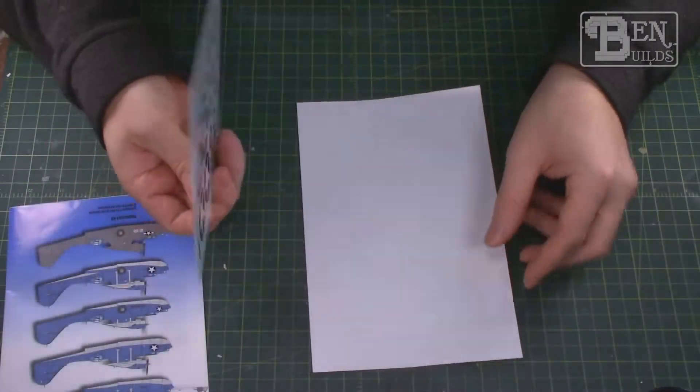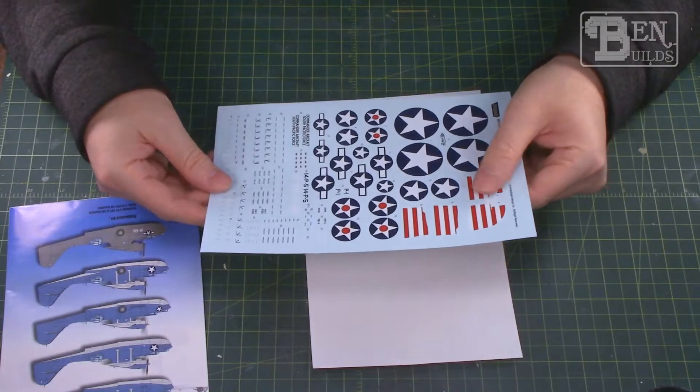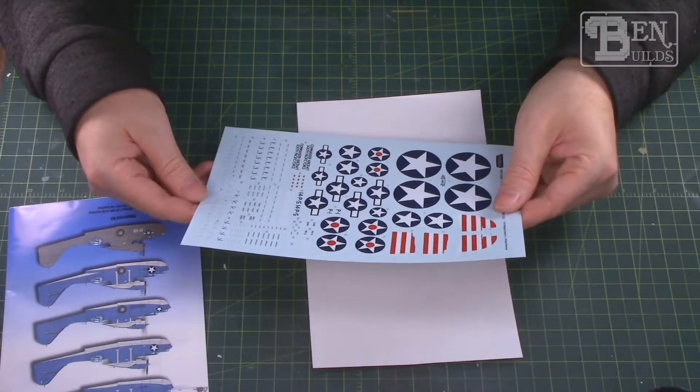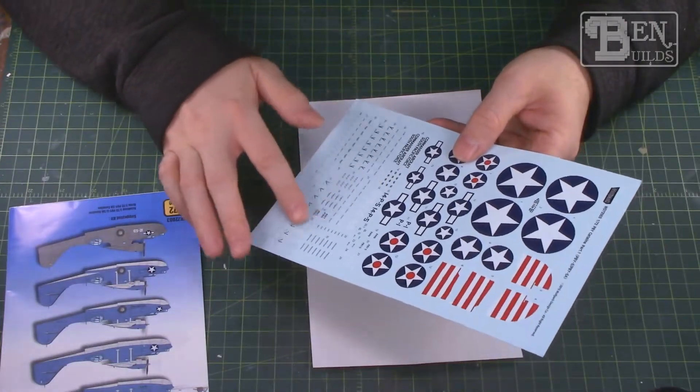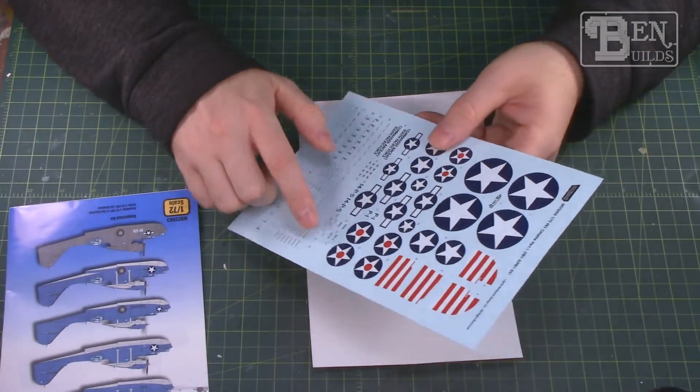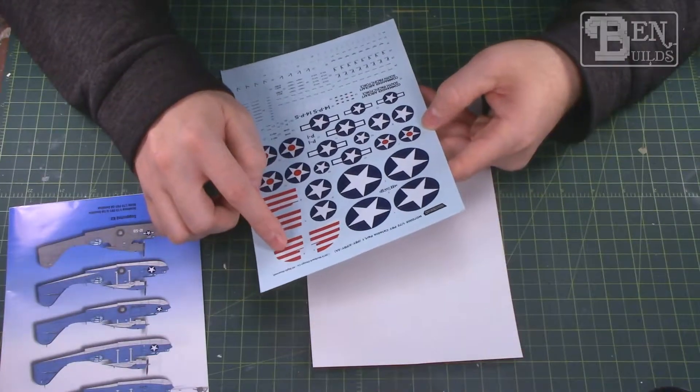The decals themselves look really, really nice guys, much nicer than the kit decals. This does not have as much flash around the actual decal itself. It's got a nice assortment of different stencils. That's really, really cool. It's going to help us out a lot. Then of course it has our individual markings for whatever version we tend to do.